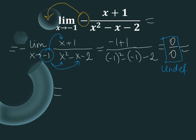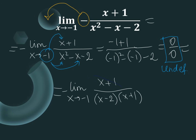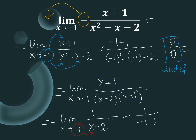The denominator x squared minus x minus 2 can be factored. We rewrite as minus limit x approaches negative 1 of x plus 1 over x minus 2 times x plus 1. We cancel out x plus 1, leaving negative limit x approaches negative 1 of 1 over x minus 2. Substituting x equals negative 1 gives negative 1 over negative 1 minus 2, which is negative 1 over negative 3.